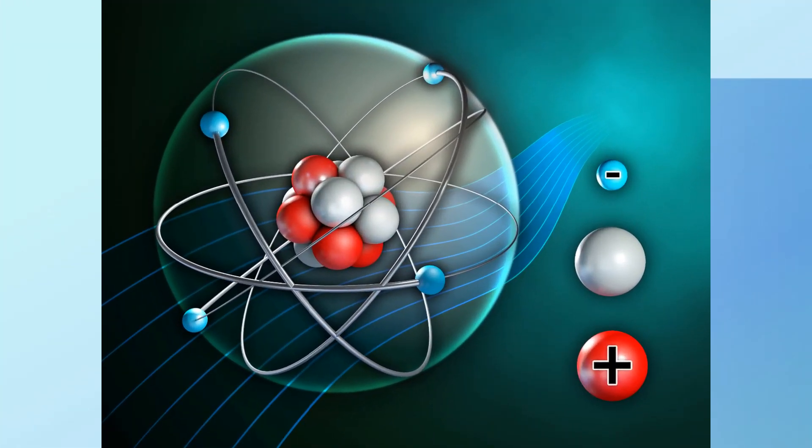Coordination chemistry is a branch of chemistry that focuses on the study of coordination compounds. These compounds are formed when a central metal atom or ion, usually a transition metal, is bonded to surrounding molecules or ions, known as ligands, through coordinate covalent bonds.